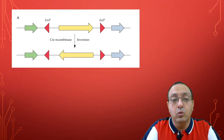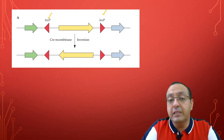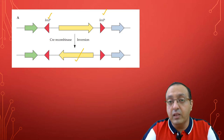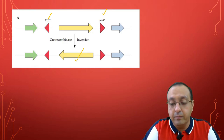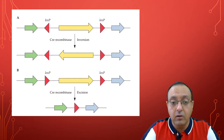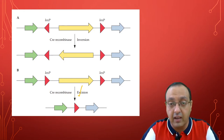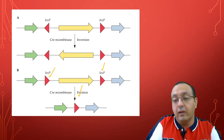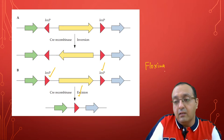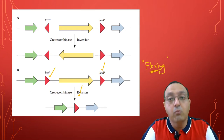If the two LOXP repeats are arranged in opposite orientation — pointing in opposite directions — the CRE recombinase mediates inversion of the DNA segment between them. If they are in the same orientation, it leads to excision of the DNA segment. This is what we do the majority of the time for creating transgenic mice: we create direct repeats, not inverted repeats, to remove DNA segments of interest. This is also sometimes called floxing — using the LOXP-CRE system to remove a DNA segment.